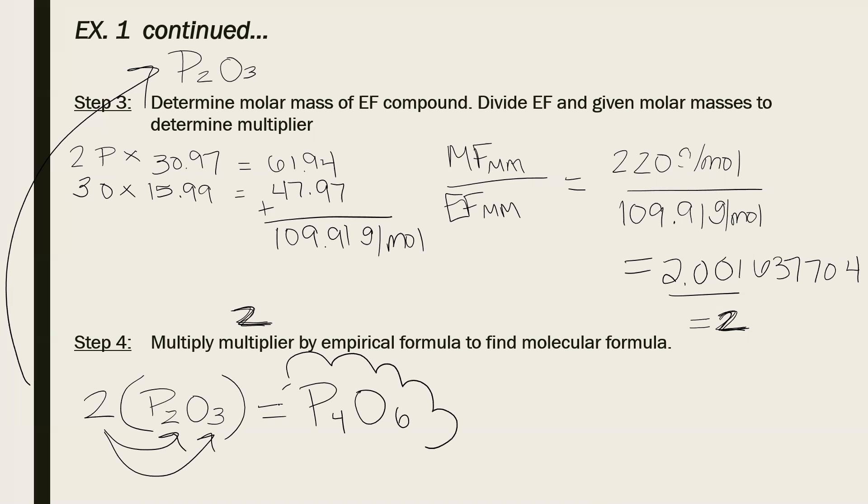Done. So that's the full problem. You can check this. Okay, we said that the compound's molar mass is 220. Check it. You can make sure this is right. It's a very easy way to check yourself. So four phosphorus, six oxygen.